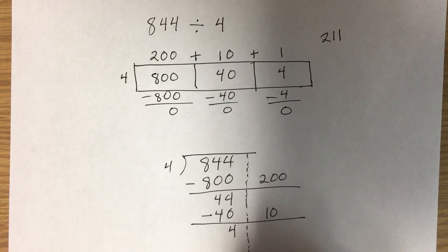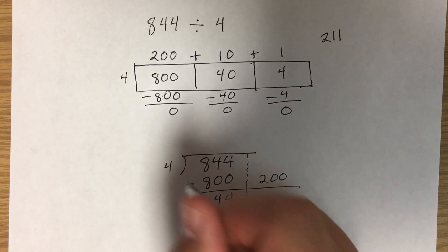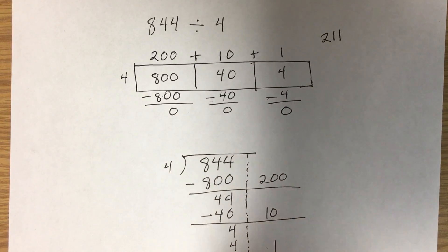We're going to do this one more time. How many ones times 4 can fit into 4? 1 times 4 can fit into 4. Then we subtract and there's nothing left. So we are done.